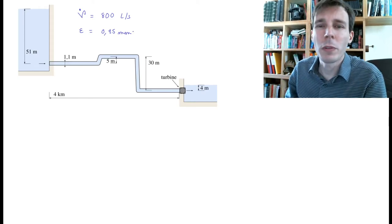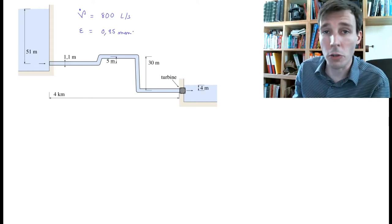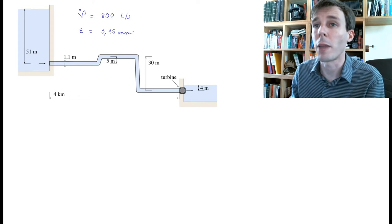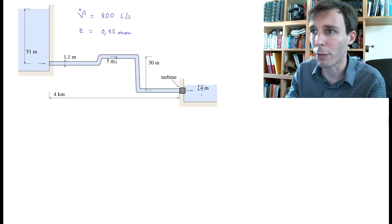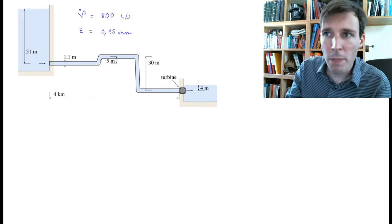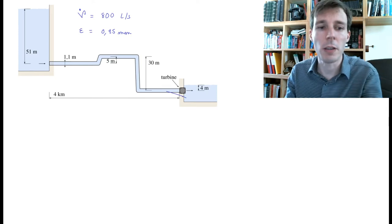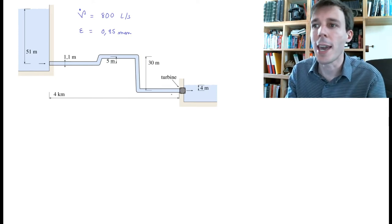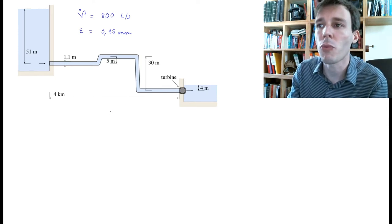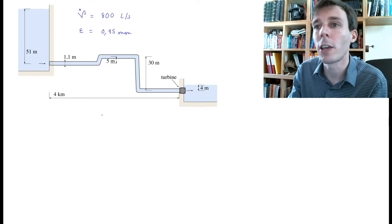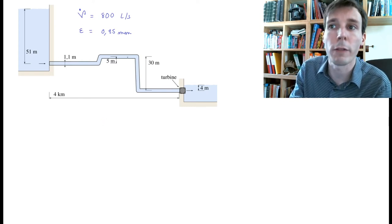In this problem, we want to calculate the pressure losses that occur due to friction inside the pipe. We have a big tank on the left, a small tank on the right. The pipe guides the water to a turbine on the bottom right. We want to calculate how much pressure loss we have due to the water flowing through the pipe.